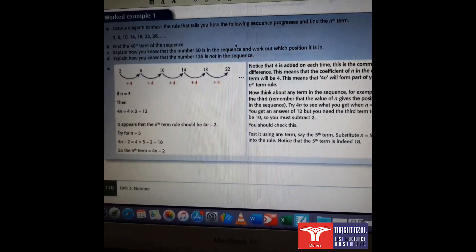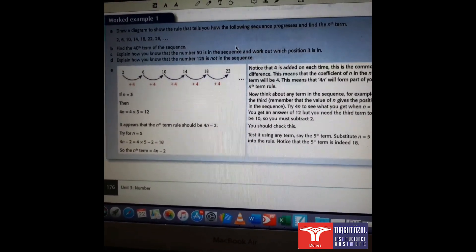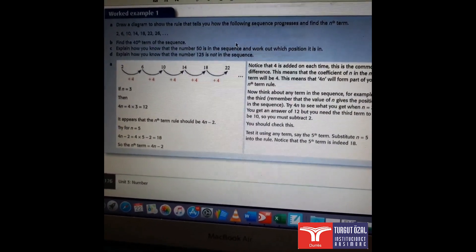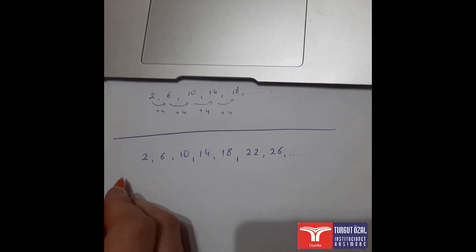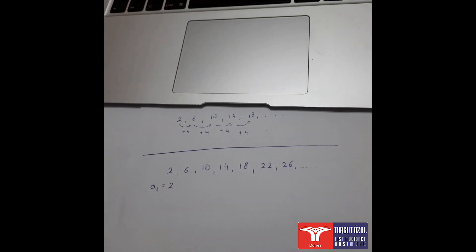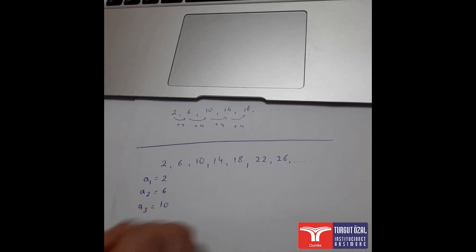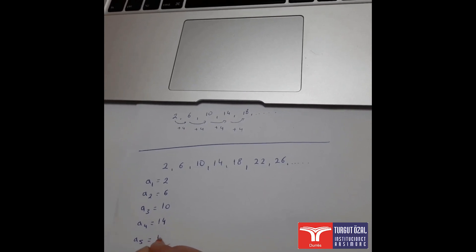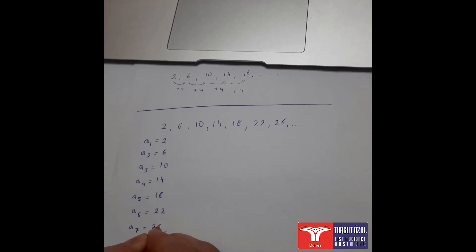The most important thing in sequences is to find the nth term, or to find any higher term when the beginning of the sequence is given. In the given example, we have to find the nth term of this sequence: 2, 6, 10, 14, 18, 22, 26, and so on. We denote the terms using the symbol: a1 equals 2, a2 equals 6, a3 equals 10, a4 equals 14, a5 equals 18, a6 equals 22, and a7 equals 26.